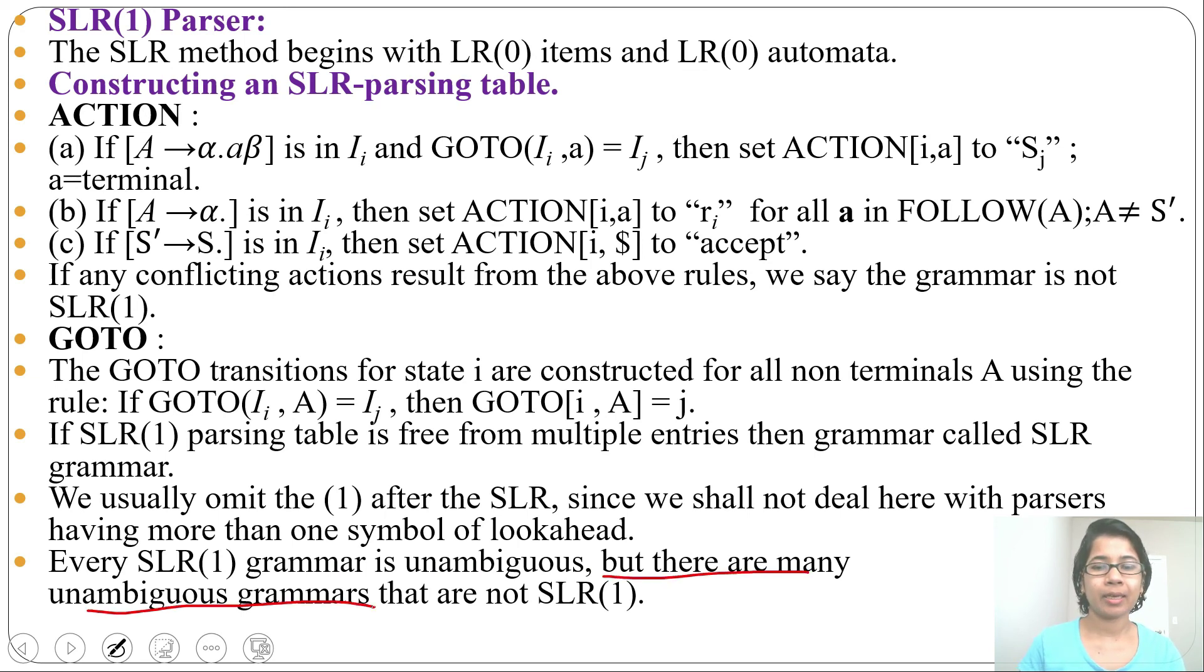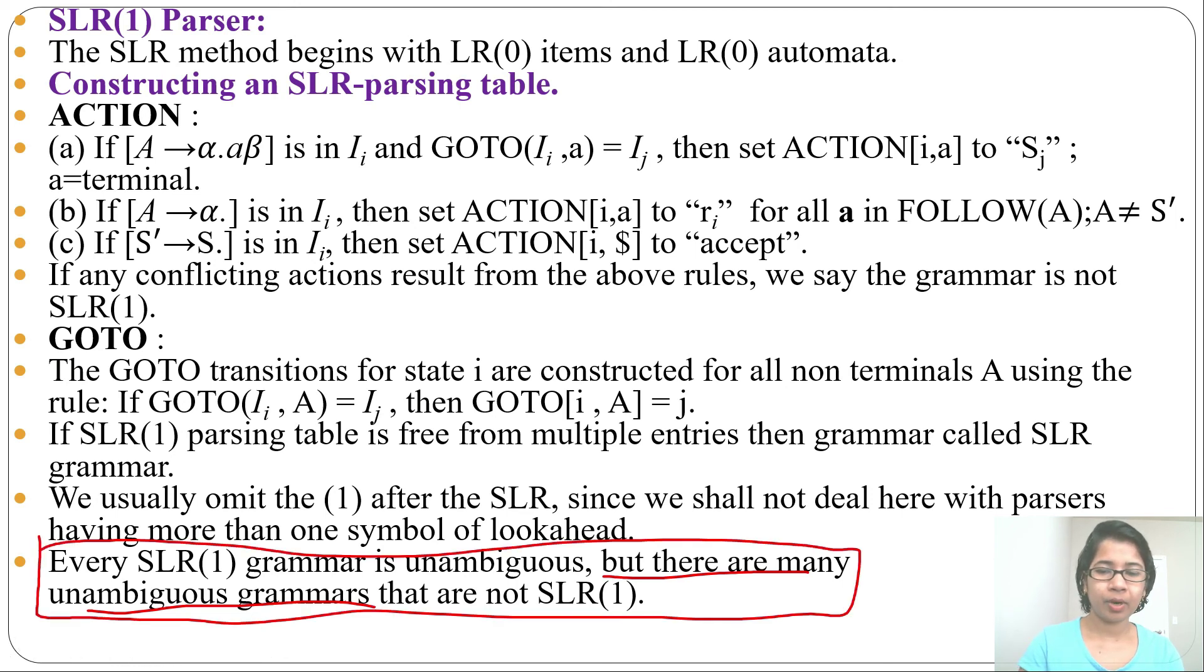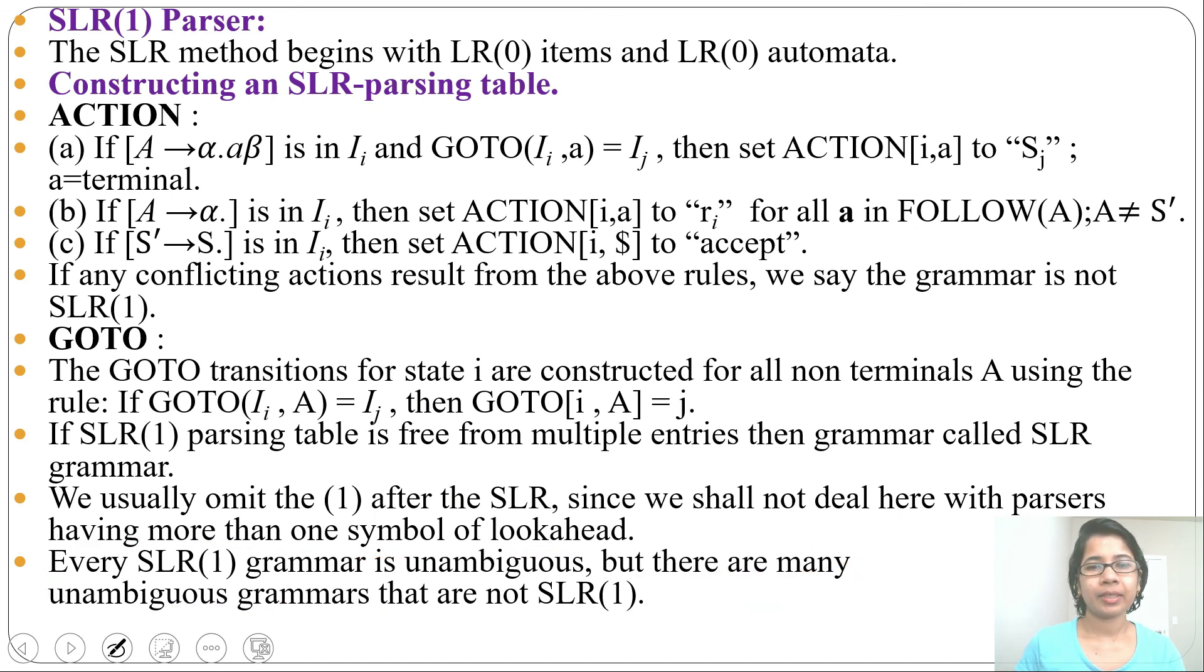But there are many unambiguous grammars that are not SLR(1). This is important. In GATE 2021, one question was asked from this statement: that every SLR(1) grammar is unambiguous, but every unambiguous grammar is not SLR(1). In next lecture, I will discuss with example how to construct SLR automata and parsing table. If this lecture is helpful for you, please like and subscribe. Thank you.